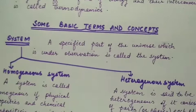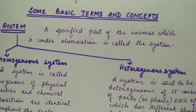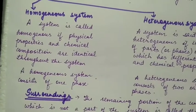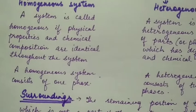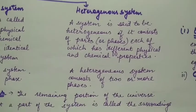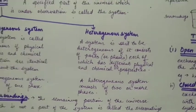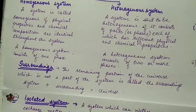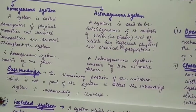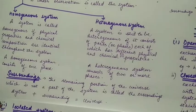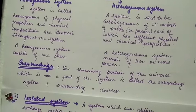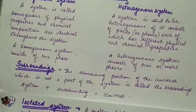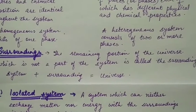System: a specified part of the universe which is under observation is called the system. System can be of two types: homogeneous system and heterogeneous system. A system is called homogeneous if physical properties and chemical composition are identical throughout the system. System is said to be heterogeneous if it consists of parts or phases, each of which has different physical and chemical properties. The remaining part of the universe which is not a part of the system is called surrounding.